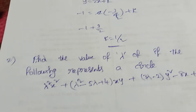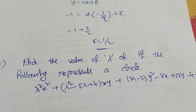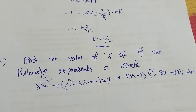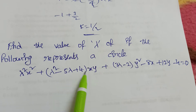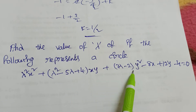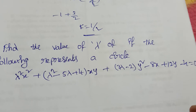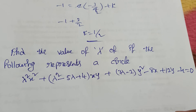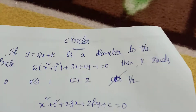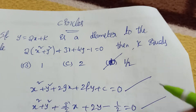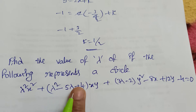Now the second problem: find the value of λ if λ²x² + λxy + 3y² - 8x + 12y - 4 = 0 represents a circle. Notice there is an xy term here, which is related to the general second-degree equation form.